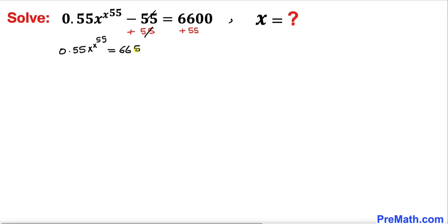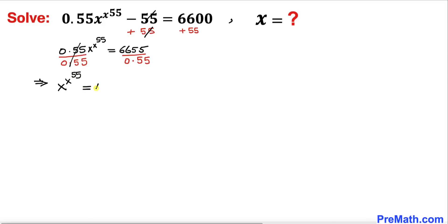Now let's go ahead and divide both sides by 0.55. We can see that they cross each other out, so therefore we end up with x to the power x to the power 55 equals 12100 on the right hand side.